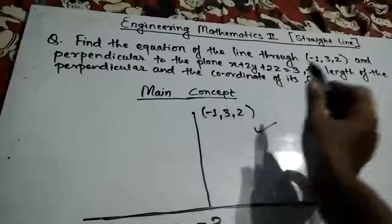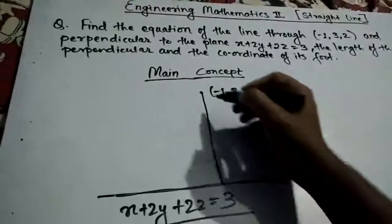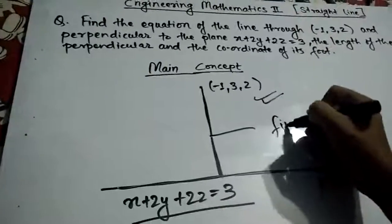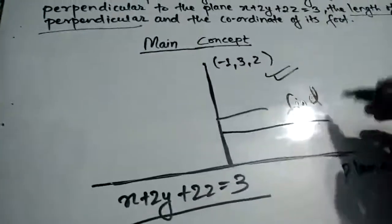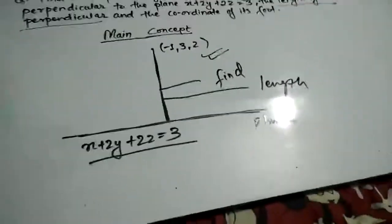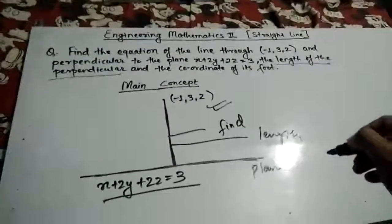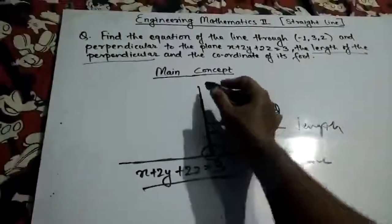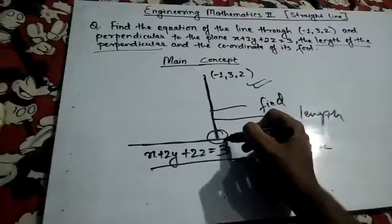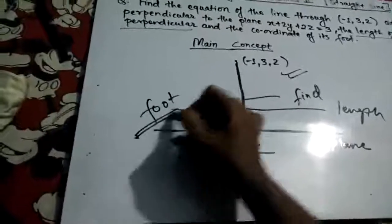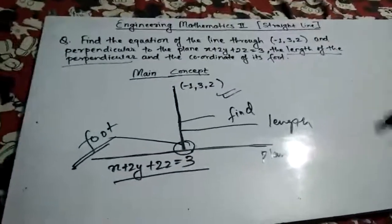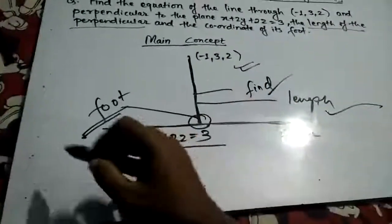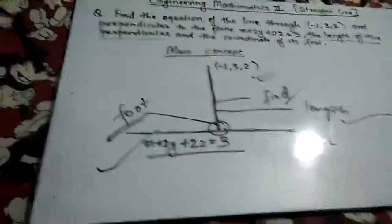What we have to find is the equation of the line containing this point. We also have to find the length of the perpendicular — that is, this length — and then the foot of the perpendicular, which is a point. So we have to find three things: one, the equation; second, the length; and third, the foot.